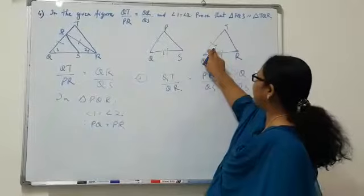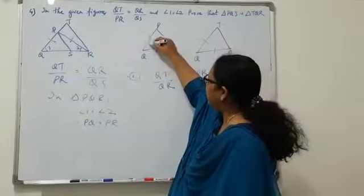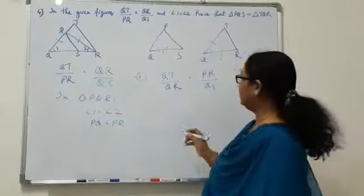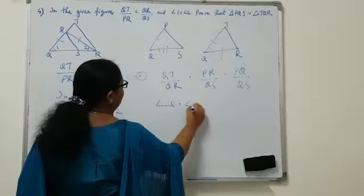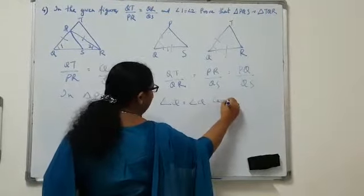And we can see that when you consider these two triangles, angle Q is the common angle. So, the next condition is angle Q equal to angle Q. The reason is common angle.